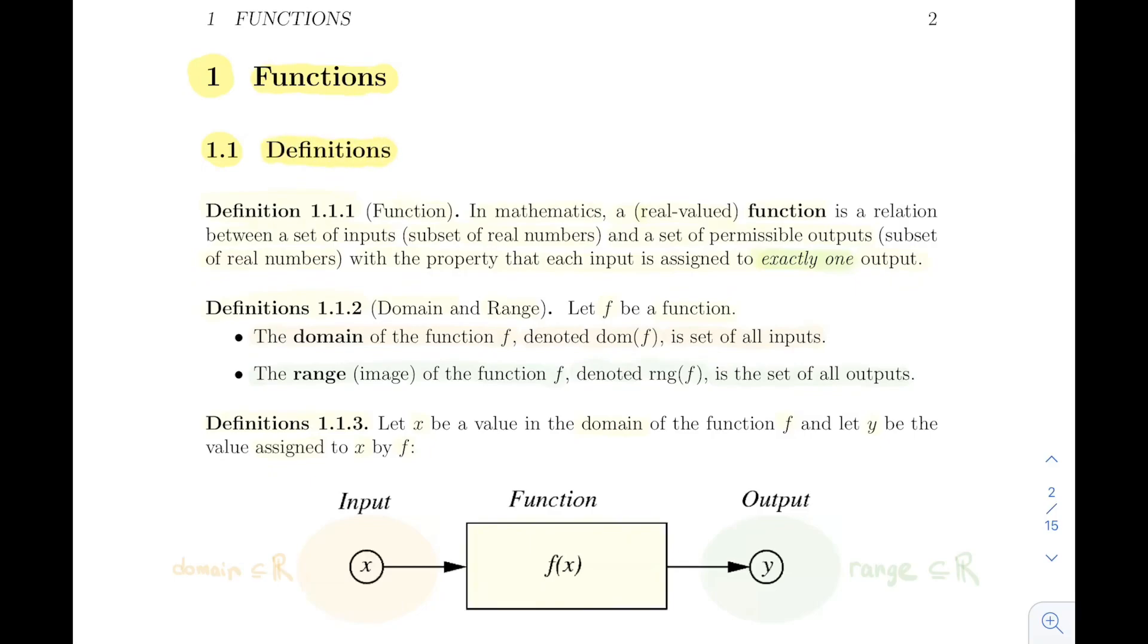So the first definition is: what is a function? In mathematics, for us in this class, a function - and it will be implied throughout this course that these are real-valued functions - is a relation between a set of inputs (a subset of real numbers) and a set of possible outputs (real numbers). To be a function, you need this very special property: for each input we assign it exactly one output.